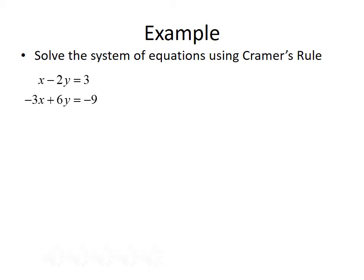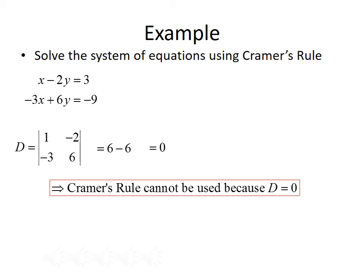Let's look at one last example: solve x minus 2y equals 3 and negative 3x plus 6y equals negative 9 using Cramer's Rule if we can. D is the determinant of 1, negative 2, negative 3, 6: 1 times 6 is 6, minus negative 3 times negative 2 is 6, so 6 minus 6 equals 0. We don't need to go any further — Cramer's Rule can't be used because D equals 0. Since we divide by D in Cramer's Rule, x and y would be undefined.